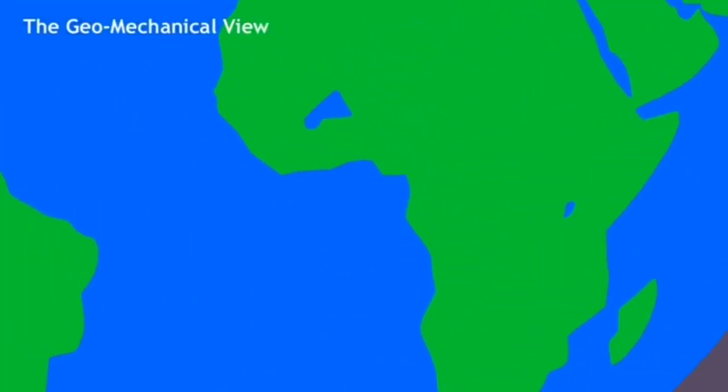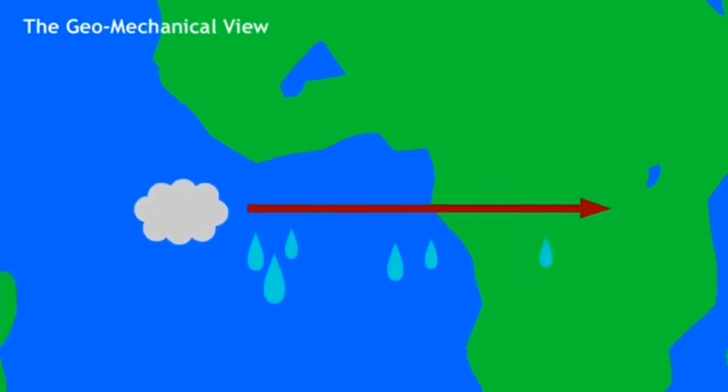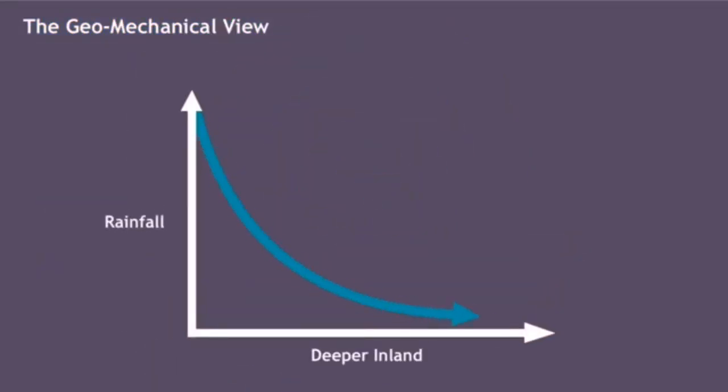According to the geomechanical view, moisture gets transferred inland when water vapor is carried from the ocean by winds. Because some of this water gets lost to precipitation, the deeper inland this air gets, the less moist it becomes. Therefore, deeper inland means less rainfall.